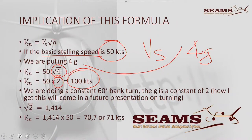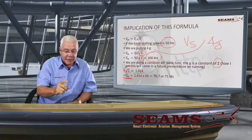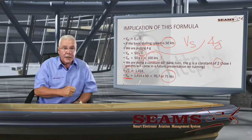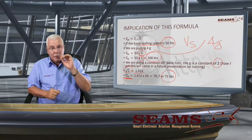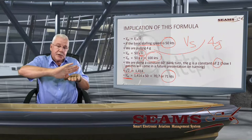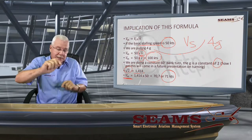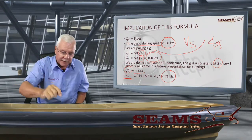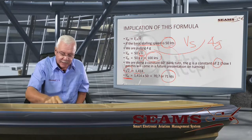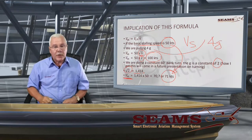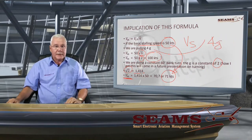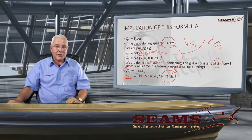If it's 2G, the square root of 2 is 1.44. So the maneuvering stalling speed in a steep turn for this specific aircraft is 71 knots. In other words, from normal straight and level, going into a steep turn and maintaining a 2G turn, all of a sudden the stalling speed has gone up from 50 knots to 71 knots. That is what you really need to understand.